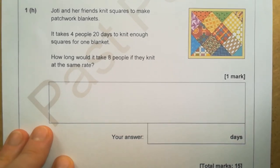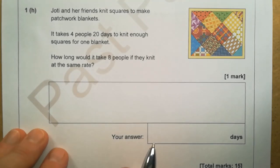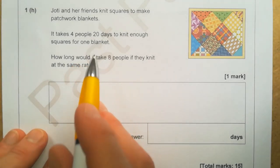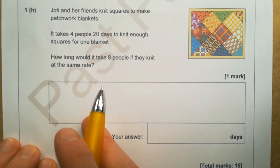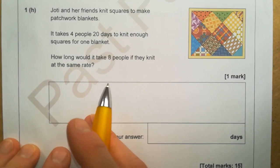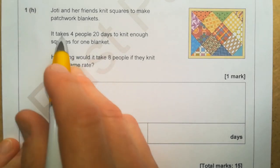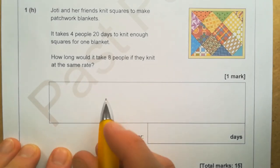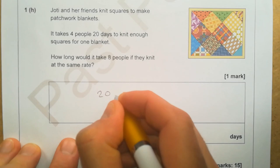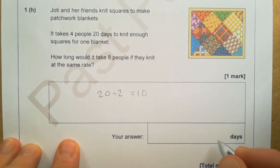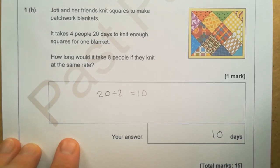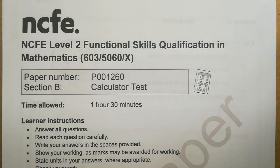Part 1H: it takes 4 people 20 days to knit enough squares for one blanket. How long would it take 8 people at the same rate? With twice as many people it takes half the time: 20 ÷ 2 = 10 days. That completes Section A.